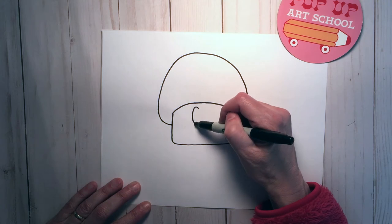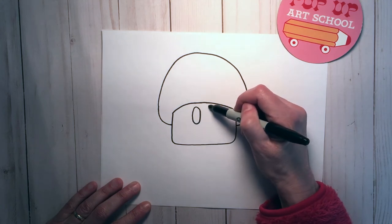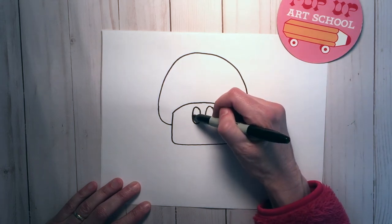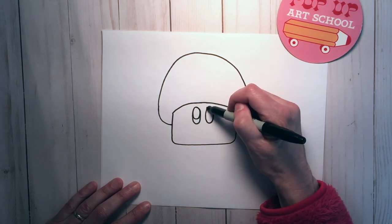Now at the bottom and the inside we're going to do long skinny ovals next to each other. Inside of those do two small ovals at the top.